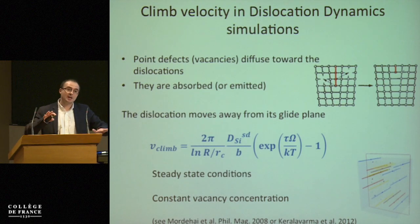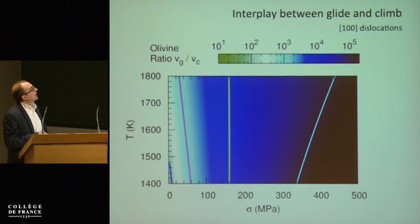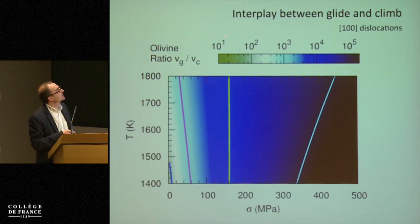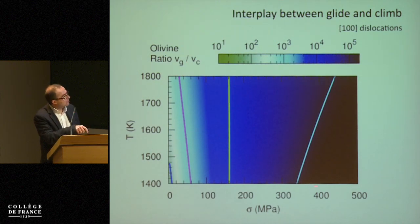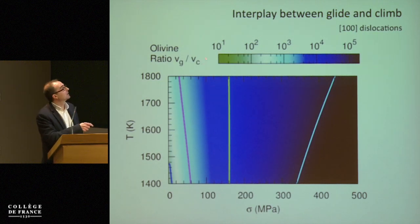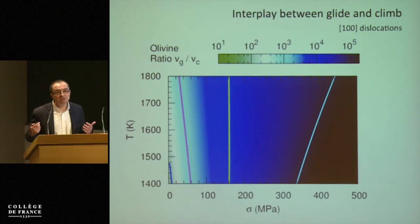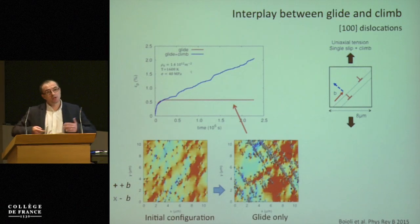Now in our simulation we have two velocities: one for dislocation glide and one for dislocation climb. To look at their interplay, we start with olivine. On this map, we plot the ratio of glide velocity over climb velocity as a function of both stress and temperature. Looking at the color scale, you see that glide velocity is orders of magnitude faster than climb velocity — whatever the temperature or stress — which makes sense because climb involves point defect diffusion.